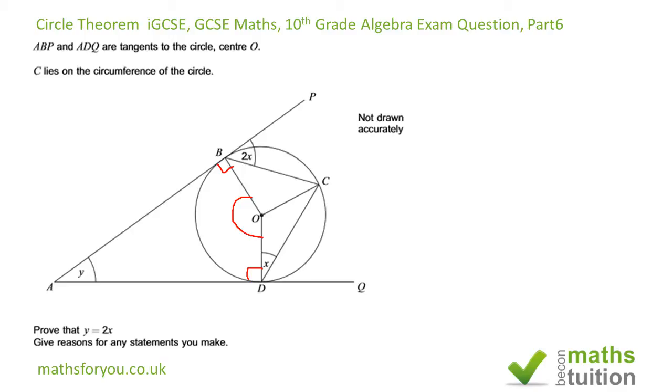You're supposed to give reasons for any statements you make, but I'm not going to write them down—I'll just say them. First, how many 2D shapes can you see there? I can see three quadrilaterals and two triangles. You can probably see many more.